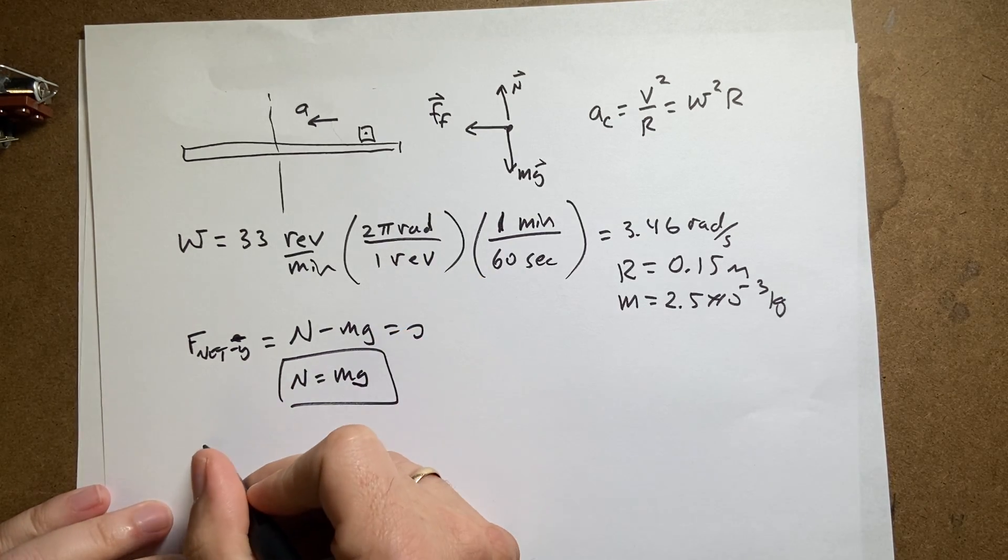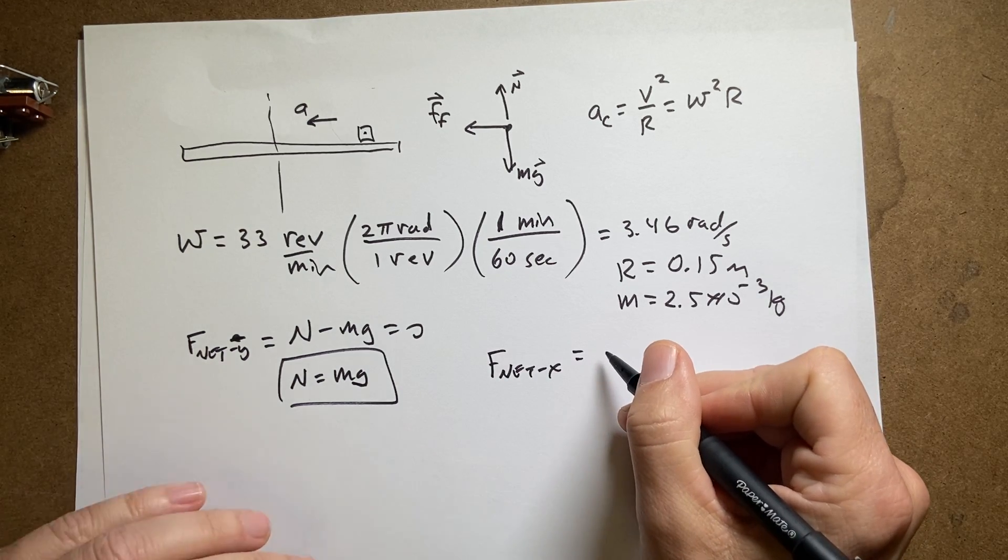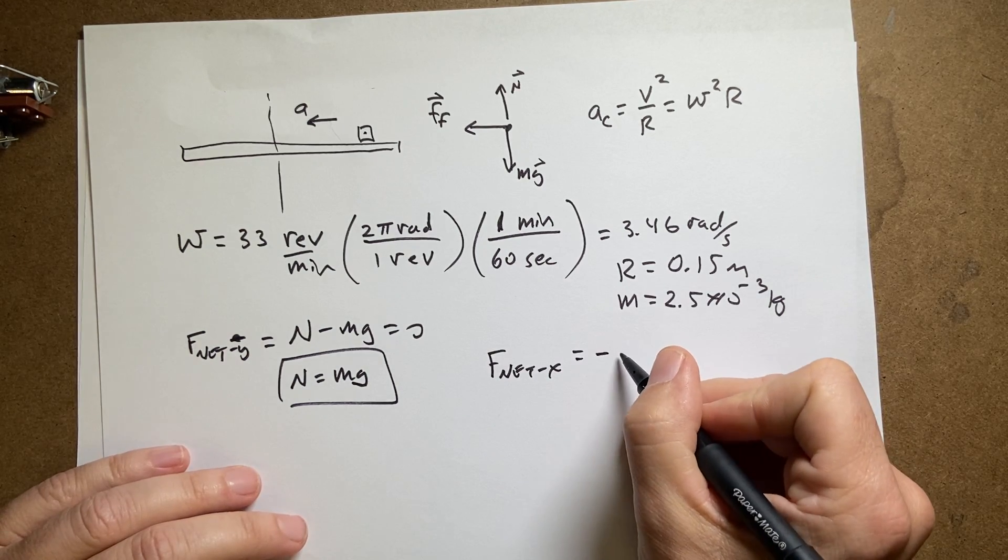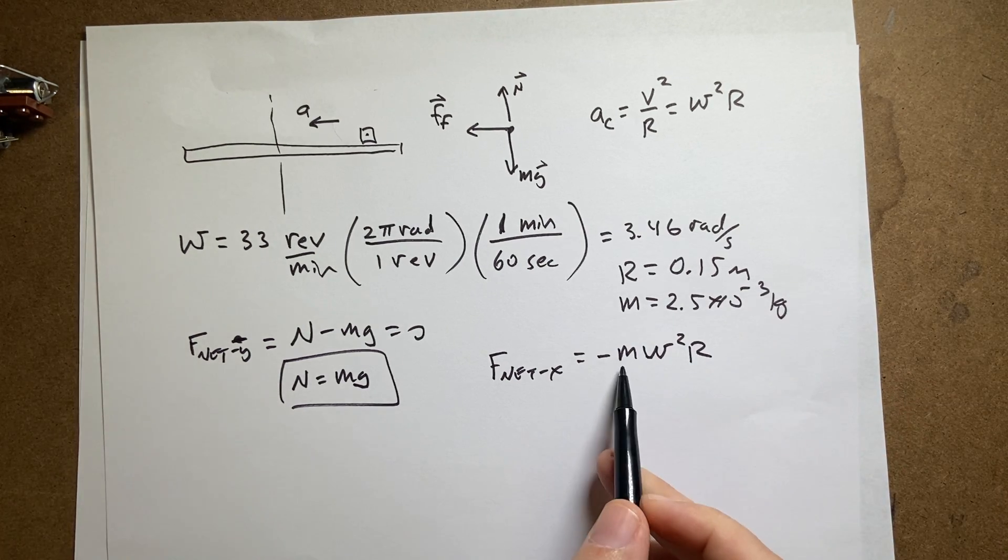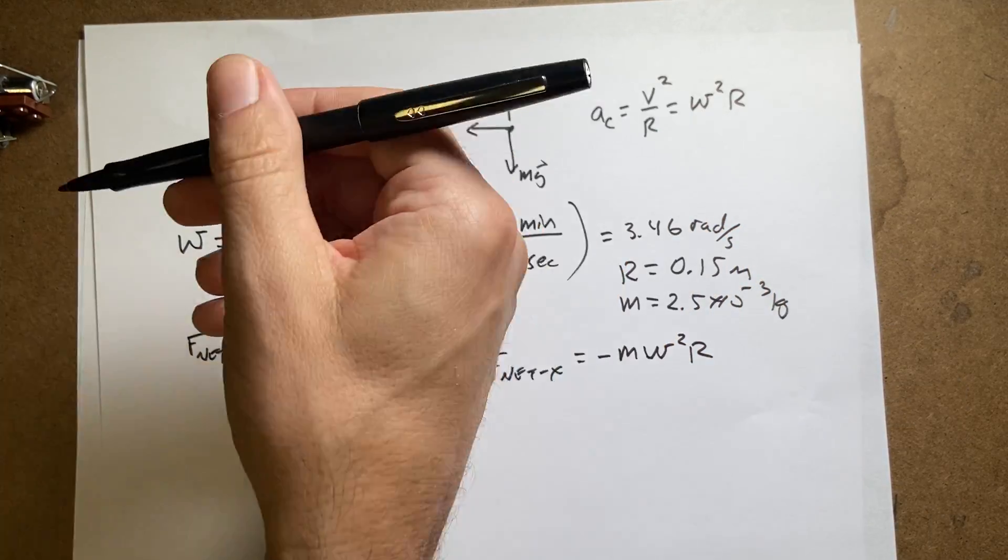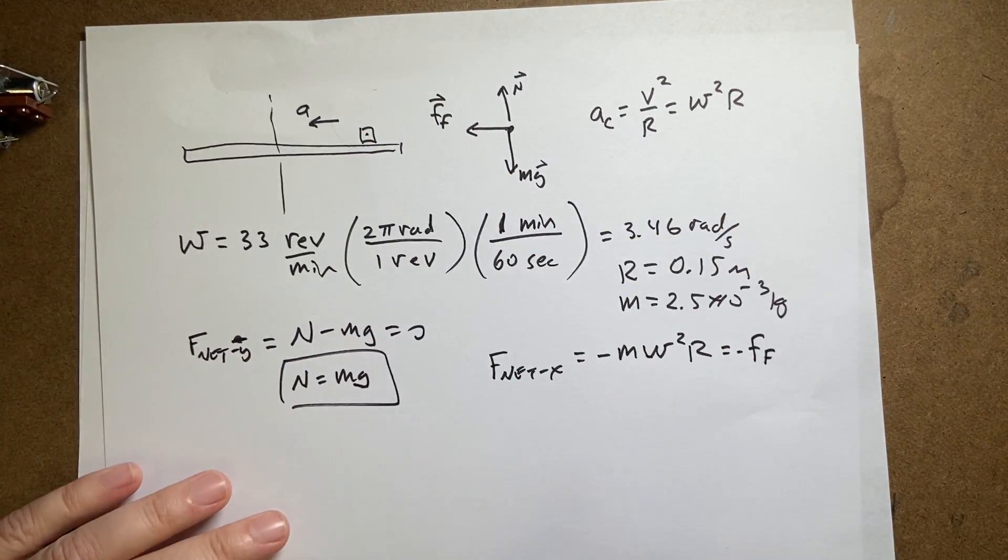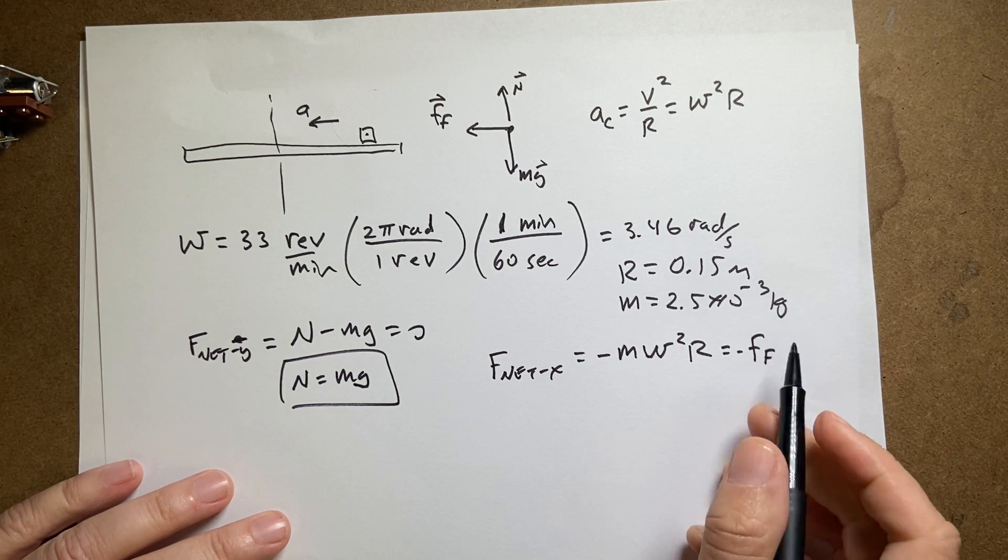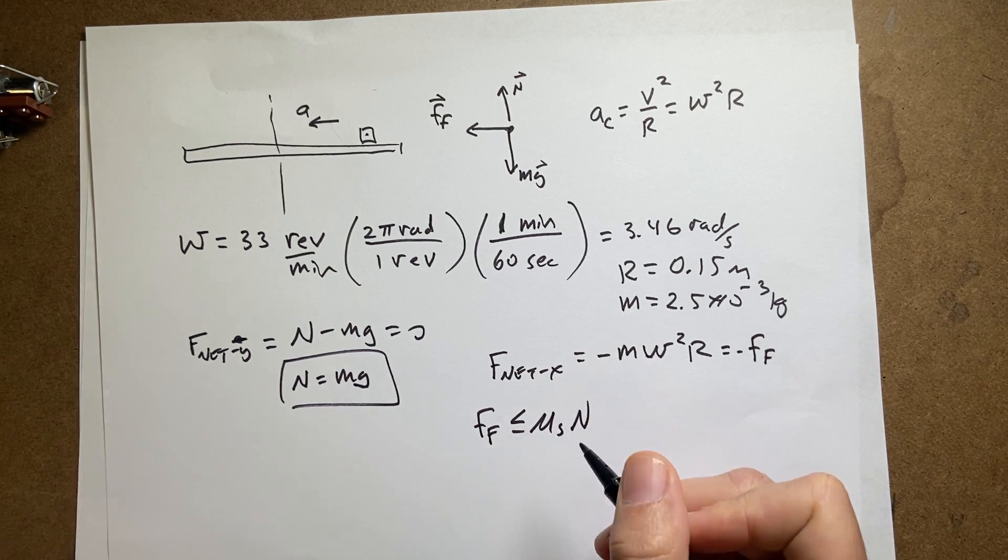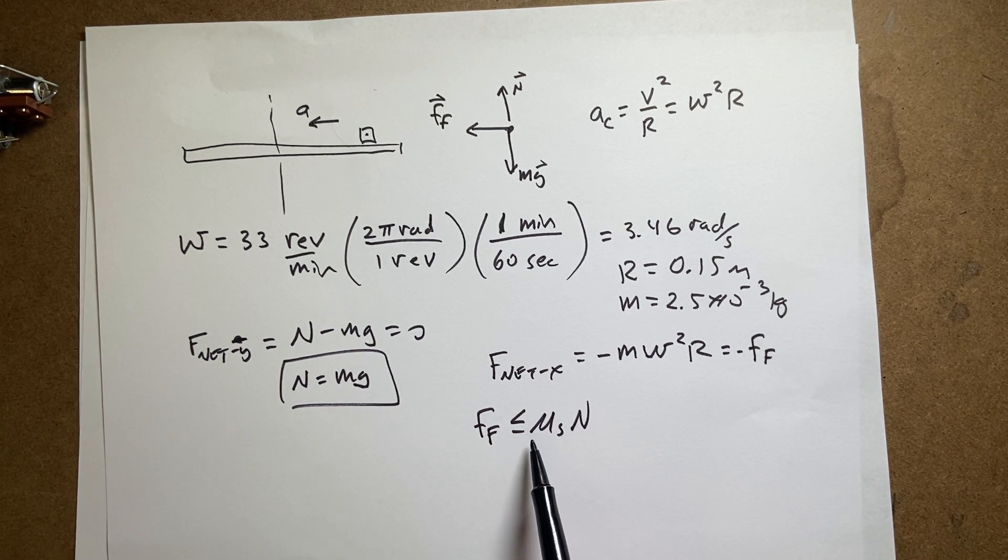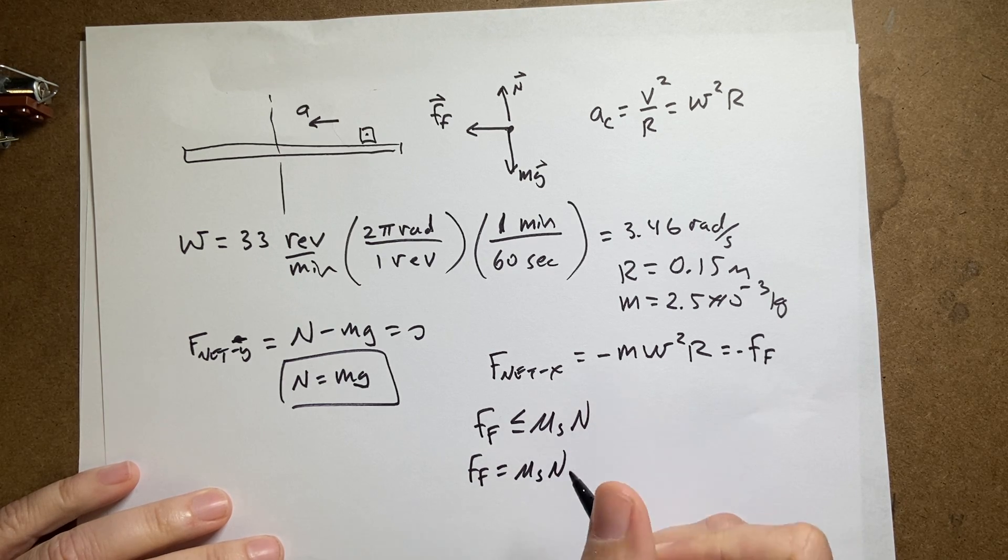Now in the x direction, I can write f net x equals negative m omega squared r. It's mass times acceleration. The acceleration in this case is in that direction. And that is equal to negative the frictional force because the friction force is in that direction. So now I can use that frictional force is less than or equal to the coefficient of friction times the normal force. And if I'm looking for the minimum coefficient, then f friction is equal to the coefficient of friction times the normal force.